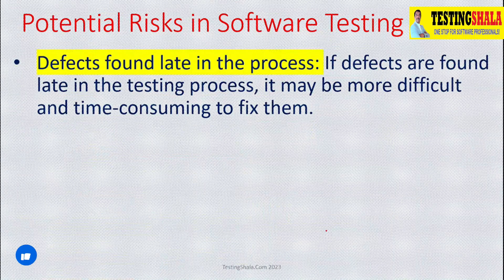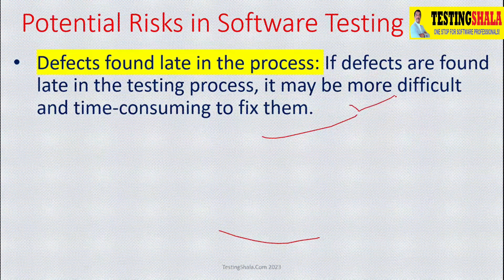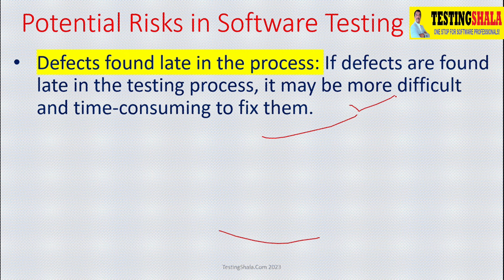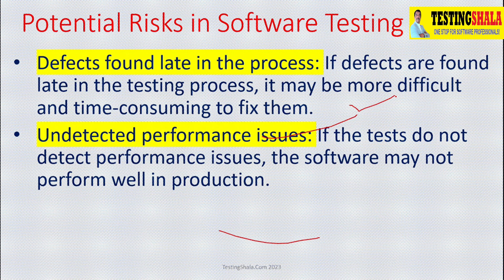The next one is defects found very late in the game. If you do not have the right test cases reviewed and if testers are not able to find critical issues early on, then overall testing activity becomes very challenging. Trying to fix those issues late is also very costly and time-consuming. The next one is undetected performance issues — if you are not putting the right architectural and performance strategies, we can anticipate performance challenges and come up with the right test cases using the right tools to mitigate these issues.